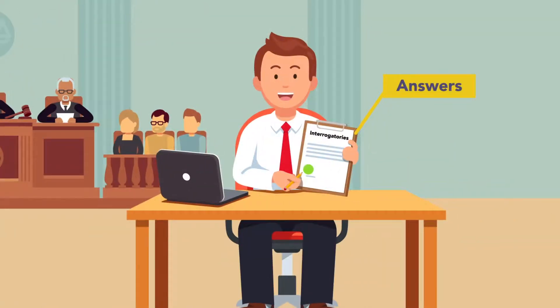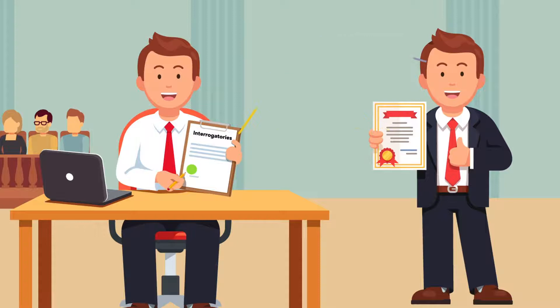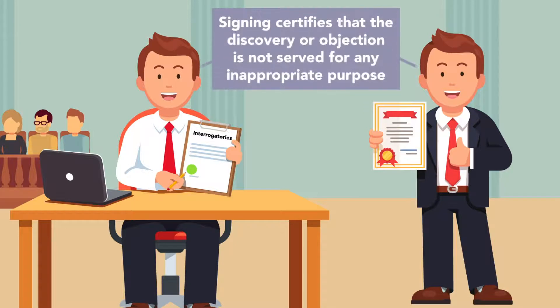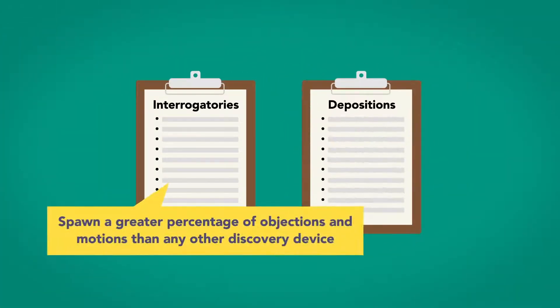The person who provides the answers to the interrogatories must sign the answers, and objections must also be signed by the attorney registering the objection. Signing certifies that the discovery or objection is not served for any inappropriate purpose. Though interrogatories are used less frequently than depositions, they spawn a greater percentage of objections and motions than any other discovery device.